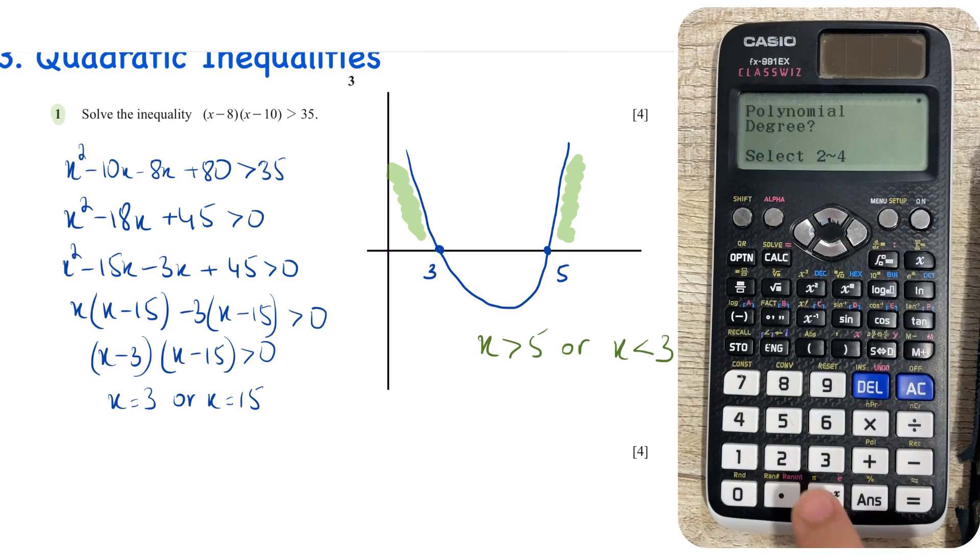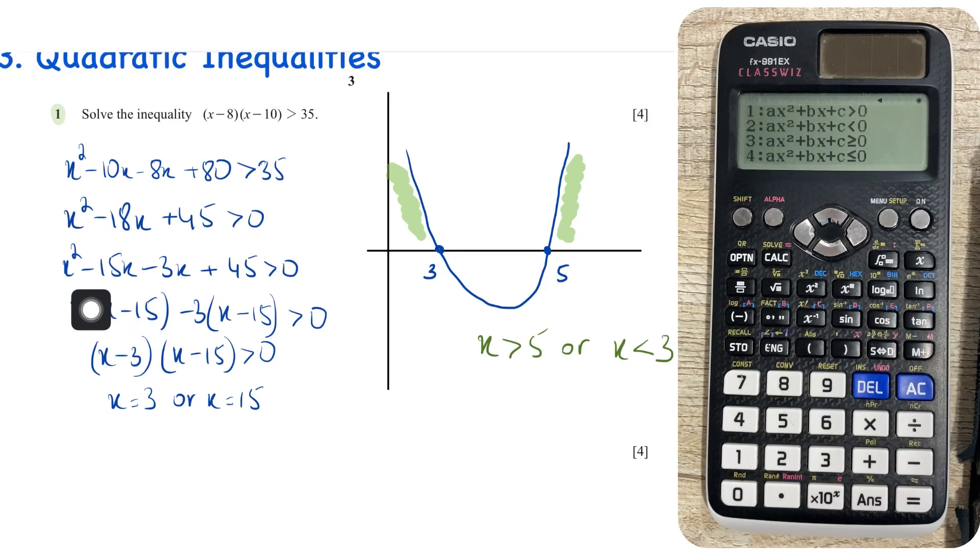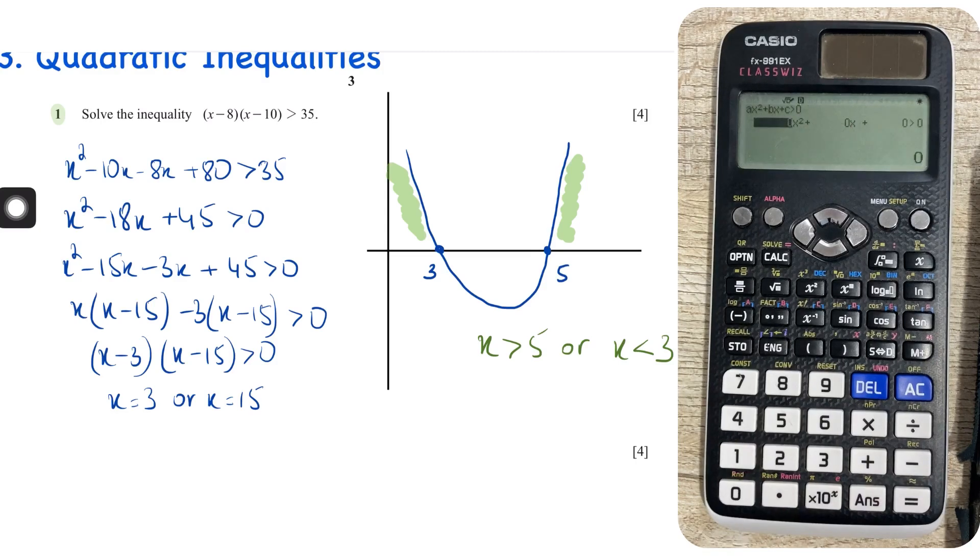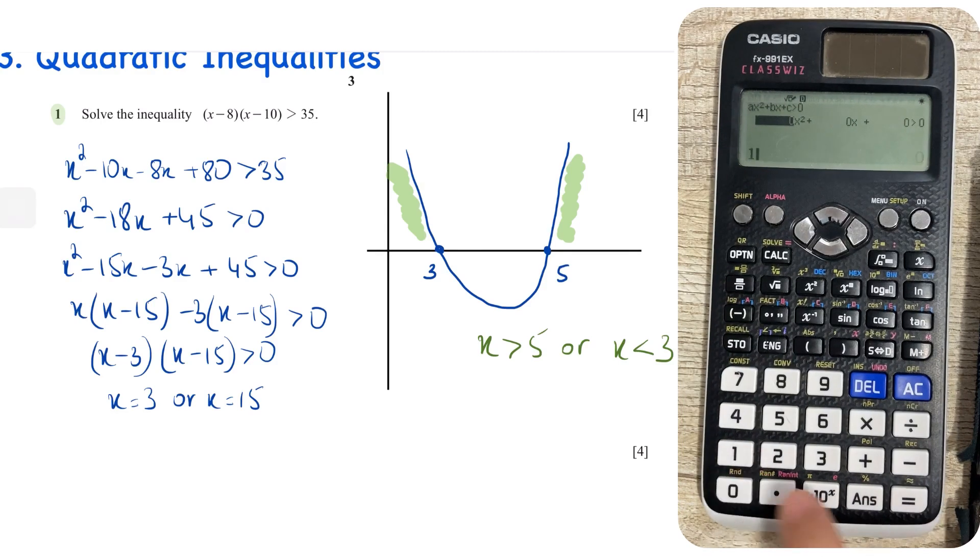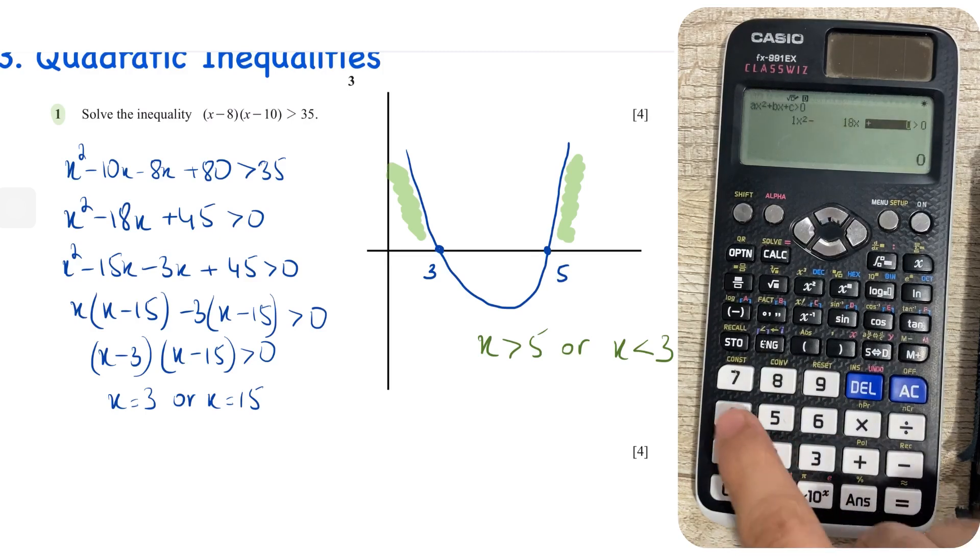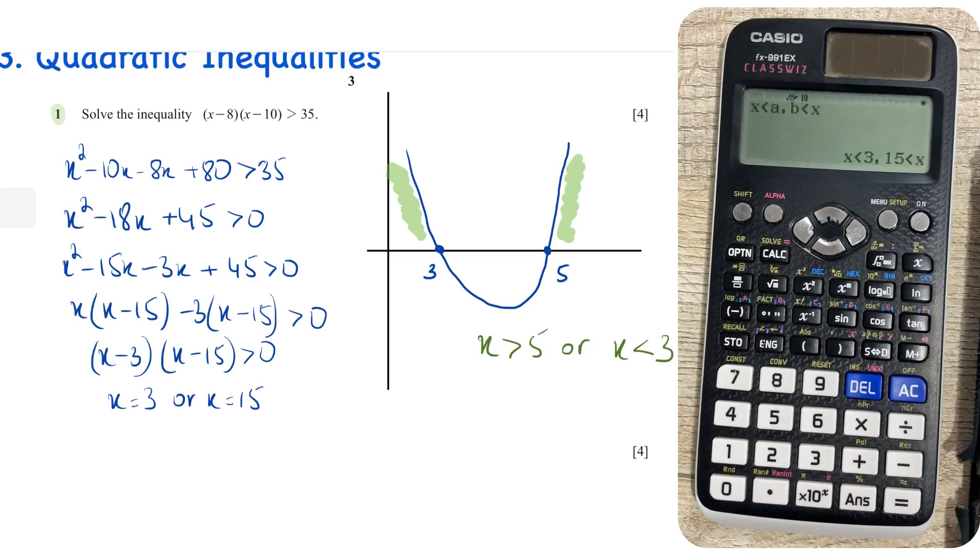Next thing we're going to do is we're going to enter what degree inequality we're talking about, so we're talking about degree number 2. Now over here you have to be very careful, because this is what we're going to be using to solve. So you can see it's x squared plus 18x plus 45 greater than 0, okay? So where do we have greater than 0? It's at the very first one. So first option, coefficient of x squared is 1, coefficient of x is minus 18, the constant is 45. Press equals again,